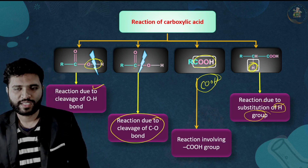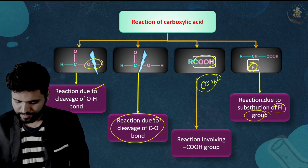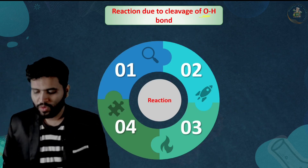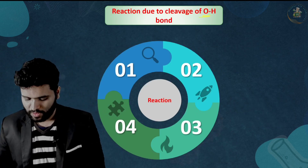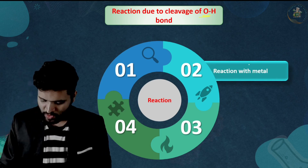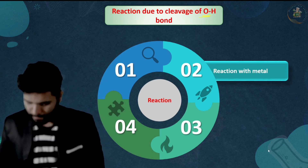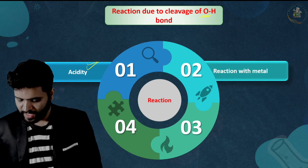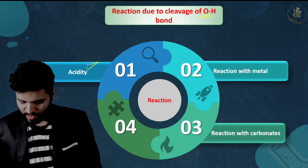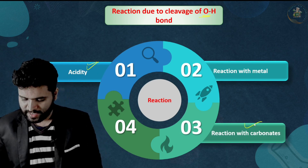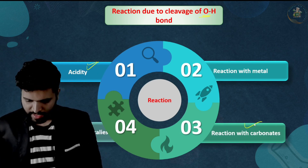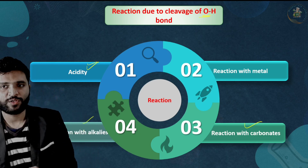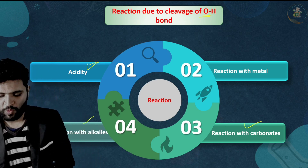Reactions due to the acidity of carboxylic acid include: reaction with metals, reaction with alkalis, reaction with carbonates, and reaction with alcohols. These are all reactions due to cleavage of the O-H bond of carboxylic acid.